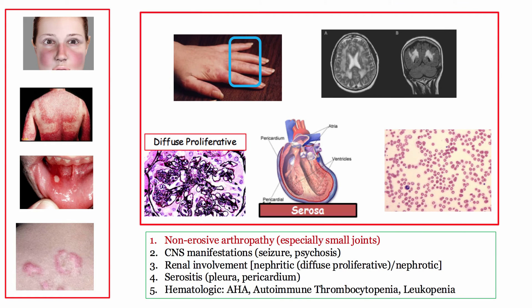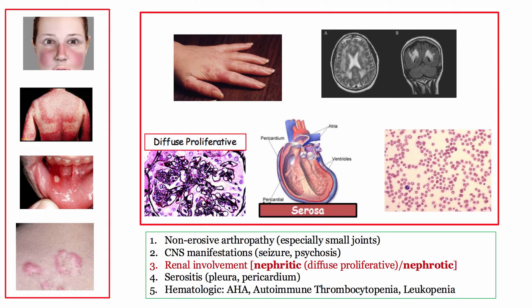The 5 organ systems include joints, CNS, kidneys, serosa, and hematologic involvement. Regarding the joints, these patients will be described with pain and swelling of the fingers, in contradistinction to rheumatoid arthritis affecting the MCP and wrist. Regarding CNS involvement, if it is mentioned, it will likely be in the form of embolism in the setting of Libman-Sachs endocarditis, discussed later in this presentation.